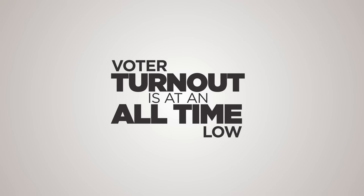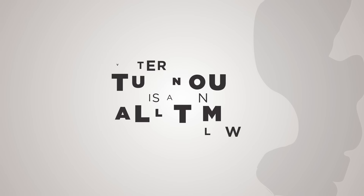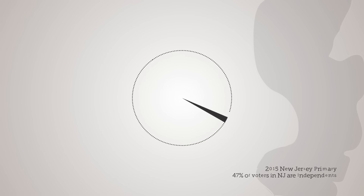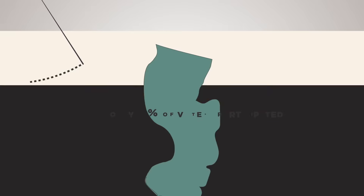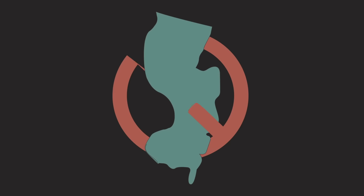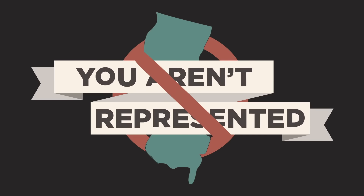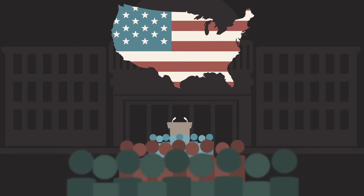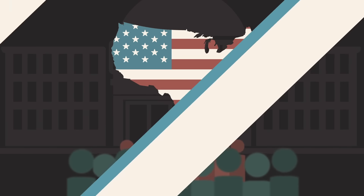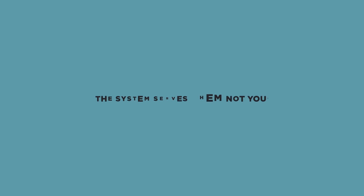Voter turnout is at an all-time low. In New Jersey, for example, less than 5% of voters participated in the 2015 primary. If you can't or don't vote, you aren't represented. So is it any wonder why representatives seem to represent their party more than the public? It's directly related to an election system that serves them, not you.